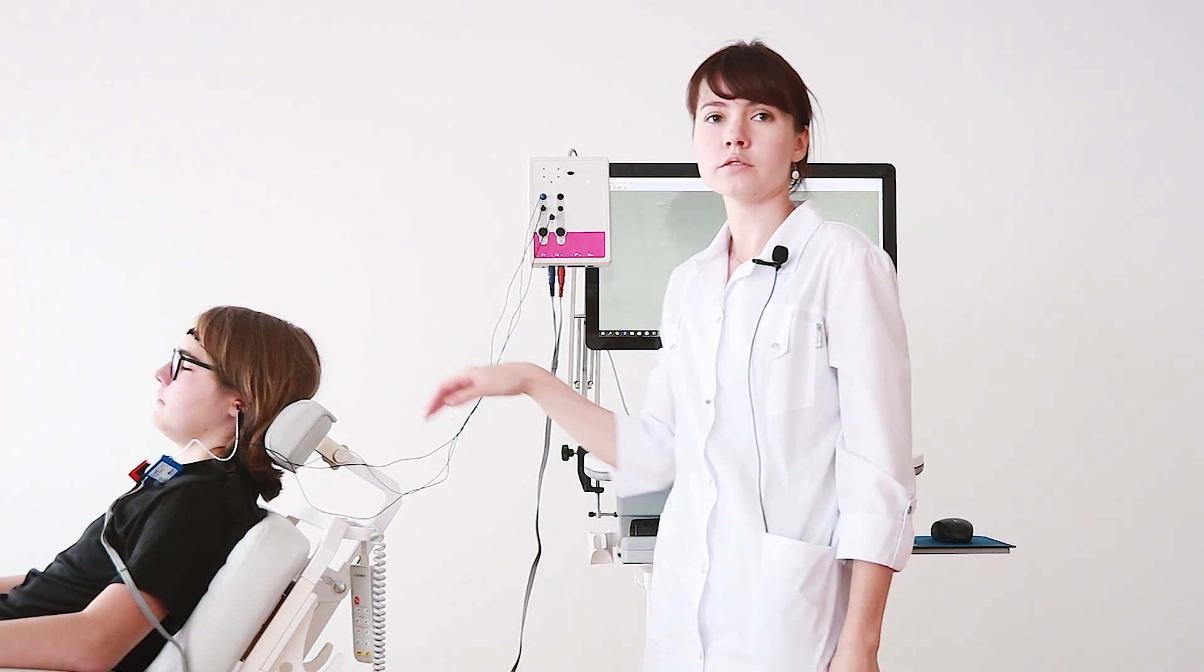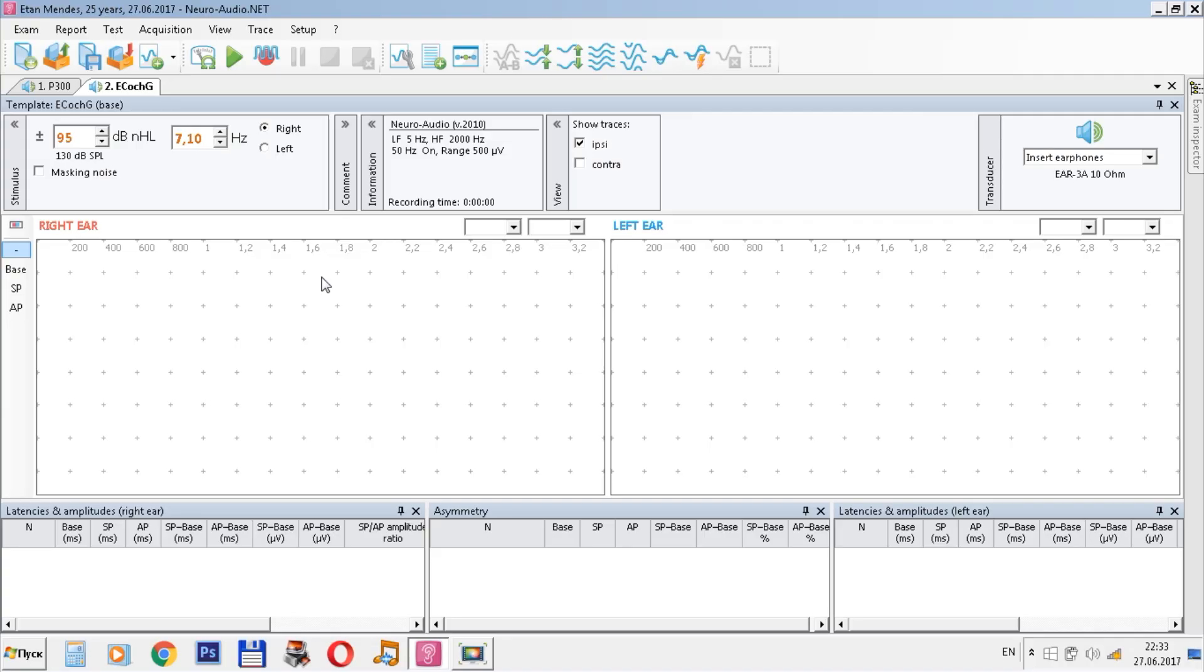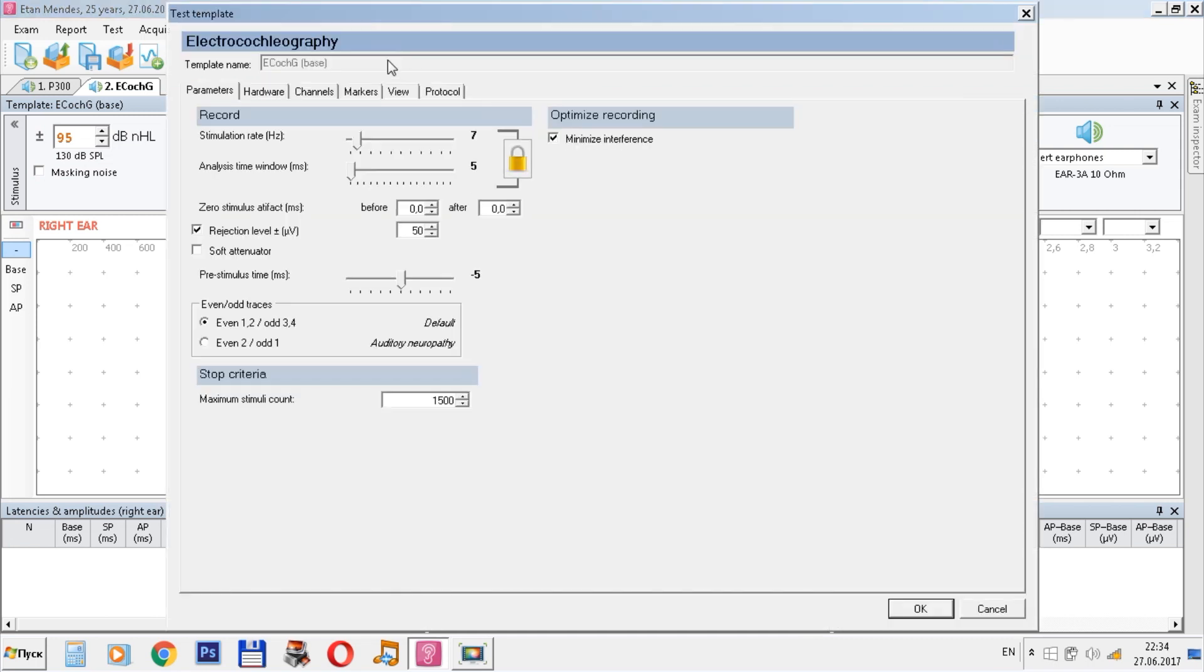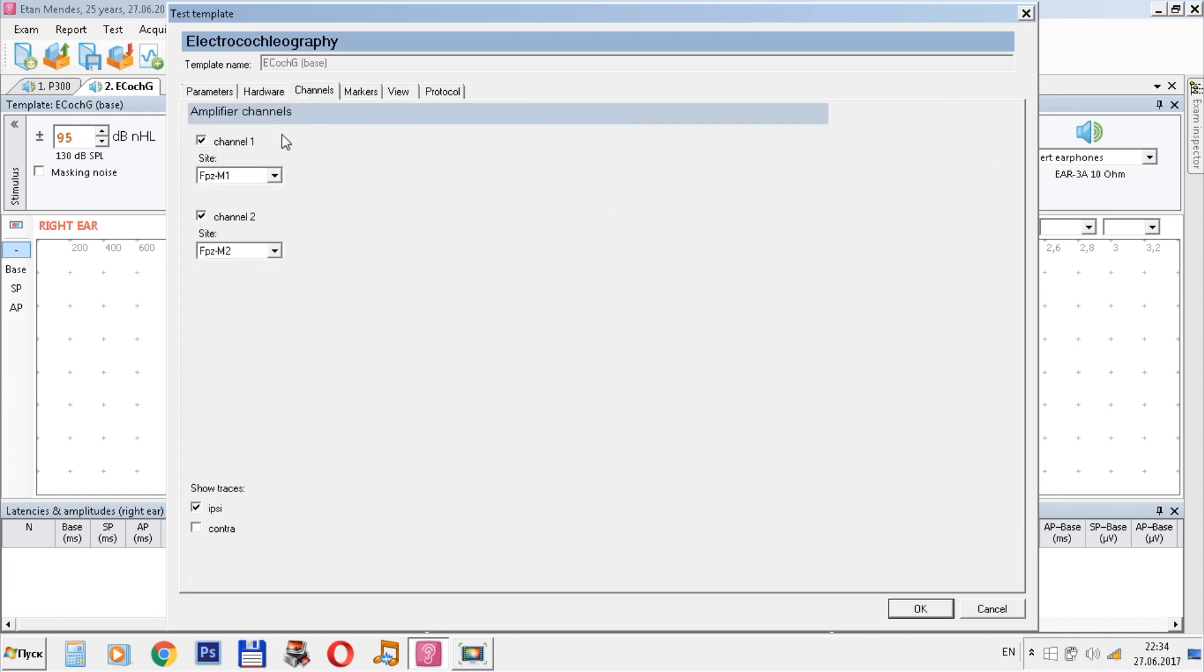And now we are ready to work in our Neeraudio.net program. We are in the electrocochleography window now. We can see the settings here: the stimulation rate, and we can choose the way to perform the stimuli. Here we can see the parameters of the hardware and stimulus. We use click stimulus now. Note that we use only one channel in this probe. Choose it and press OK.